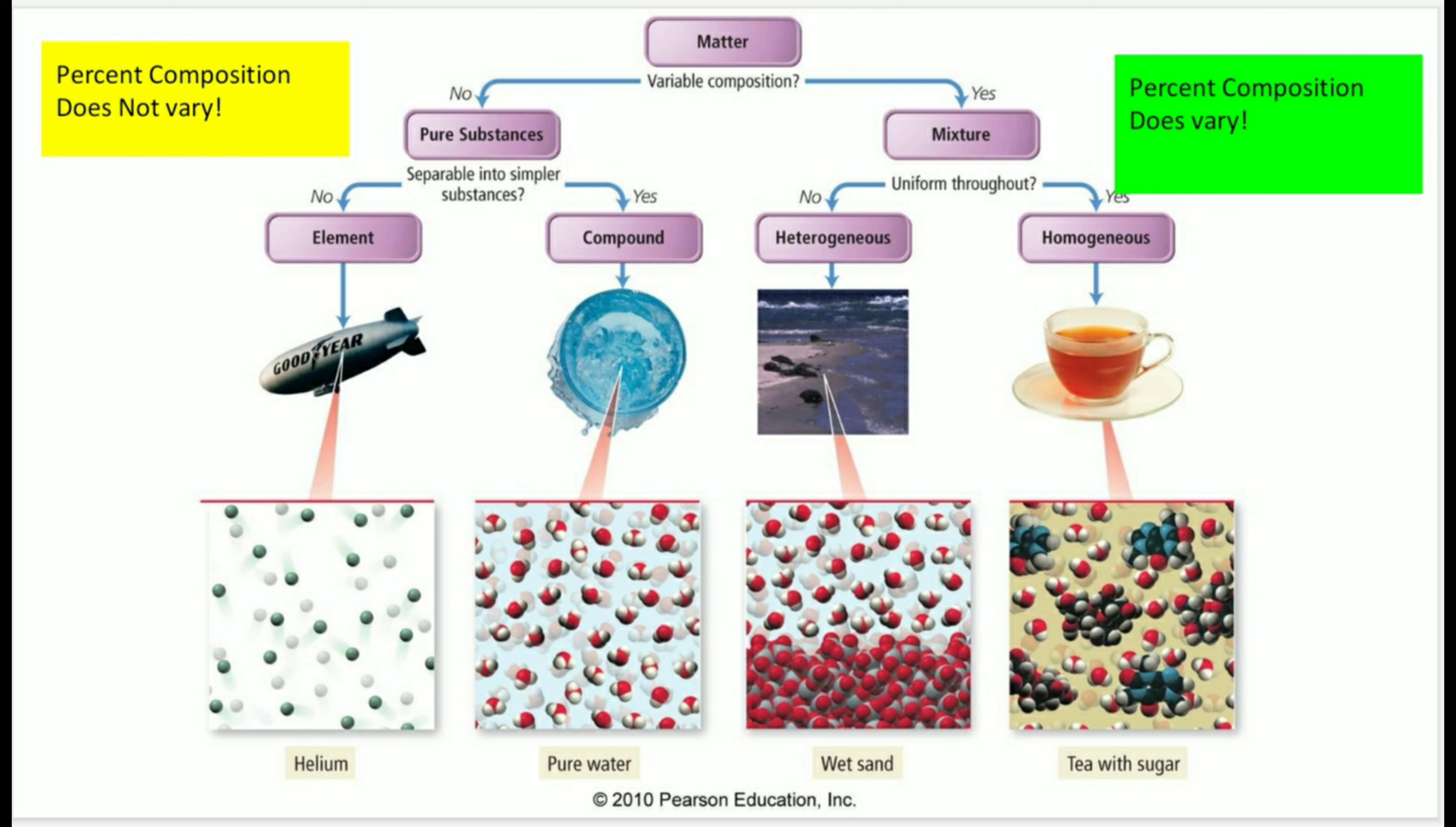Elements are only made up of one type of atom. All elements are 100% composition by mass of their element. Compounds have different percent compositions by mass. We know that when the formula changes, so does the name, the properties, and the percent composition by mass.